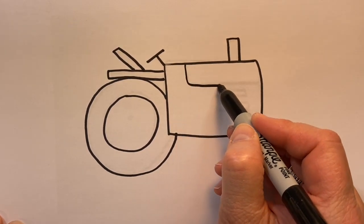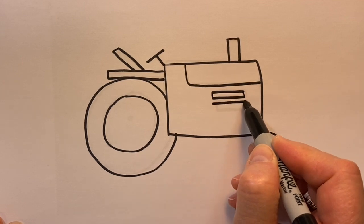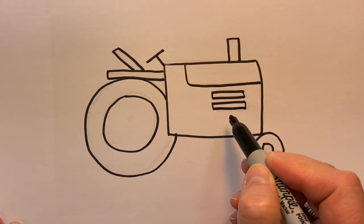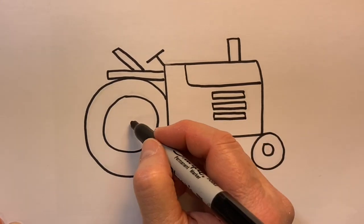Just adding these other detail lines and again I'm tracing on top of a drawing I've already created just so I can draw a little faster.